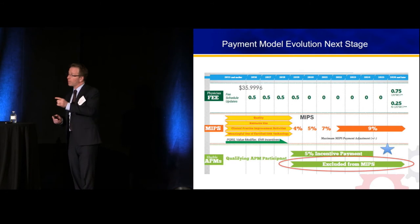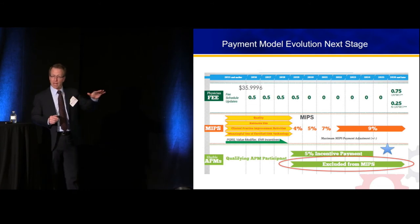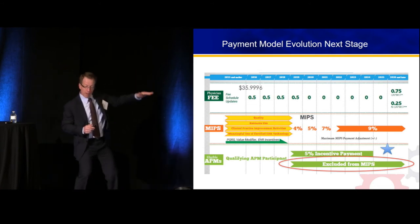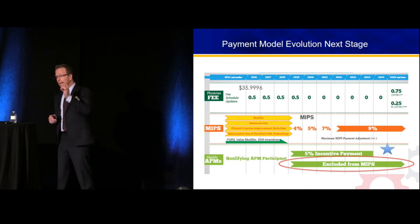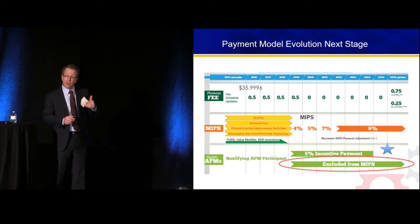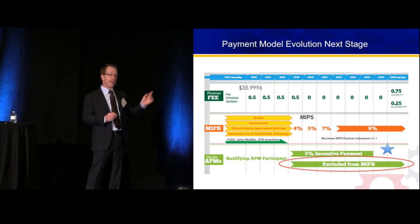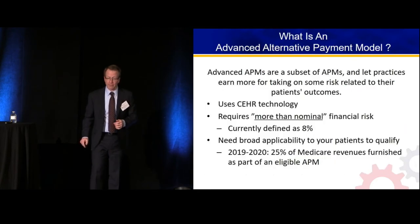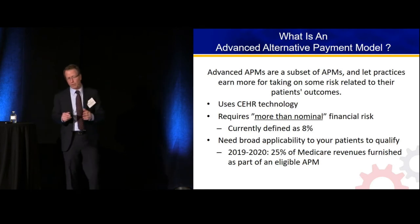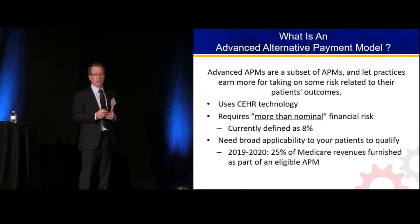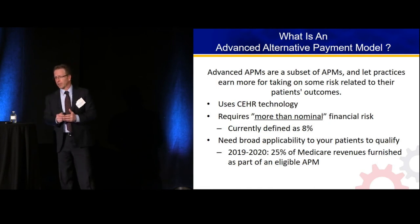One of the things that's been developing are what are called advanced payment models. The complications of the merit-based incentive payment system can be overcome — you can be exempt from MIPS if you have a large percentage of your patients that fall under an advanced payment model. These are called advanced alternative payment models, a subset of alternative payment models, and the hallmark is the group has to take on risk.